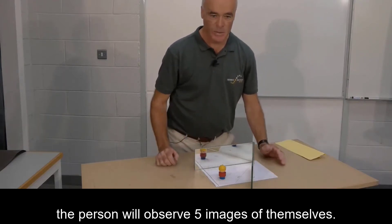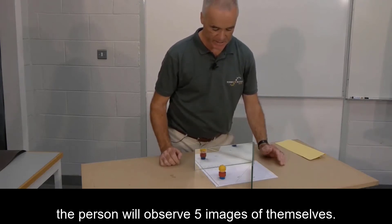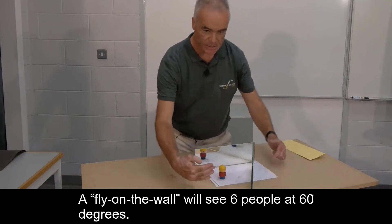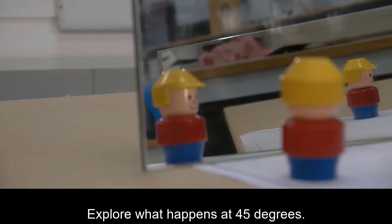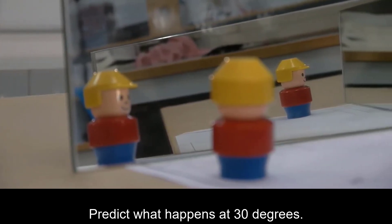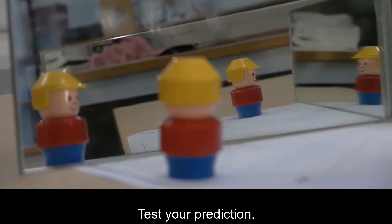A fly on the wall will see six people at 60 degrees. Explore what happens at 45 degrees and predict what happens at 30 degrees and then test your prediction.